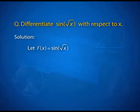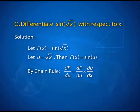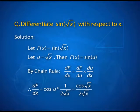Our function, let us call it capital F, is sin of root x. Let us take the inner function, root x, to be u. Then f of x is nothing but sin of u, and therefore by chain rule, dF/dx is the derivative of f with respect to u times the derivative of u with respect to x. That is cos of u, because the derivative of sin u with respect to u is cos u, times the derivative of root x, which is 1/(2√x). Replace u with root x and your answer is ready.